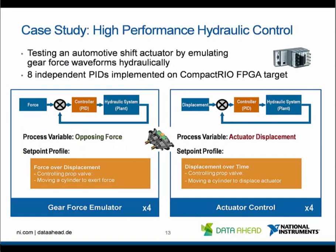Here is an application example of a high-performance hydraulic control system. In this case, we were testing an automotive shift actuator similar to the one pictured in the center of the screen, doing this by emulating gear force waveforms. On the right side of the screen, you can see that we had to control the actuator. We used a setpoint profile of displacement over time, controlling a prop valve that was part of the hydraulic system that controlled the actuator.